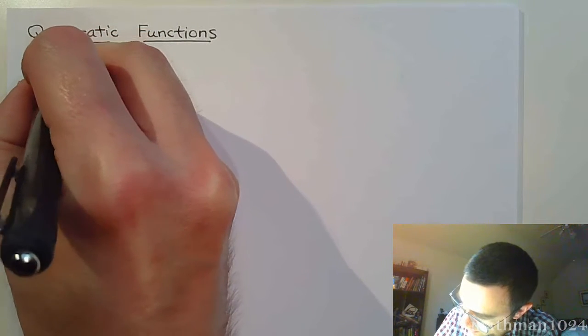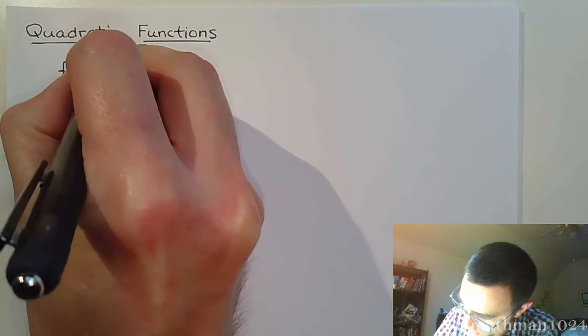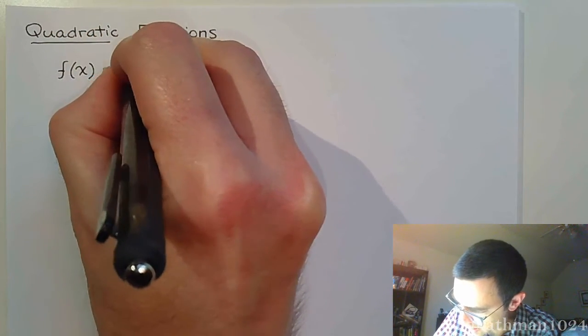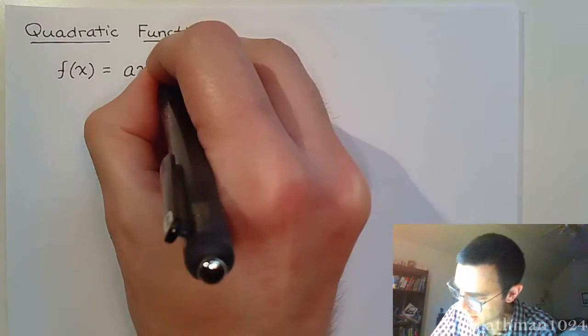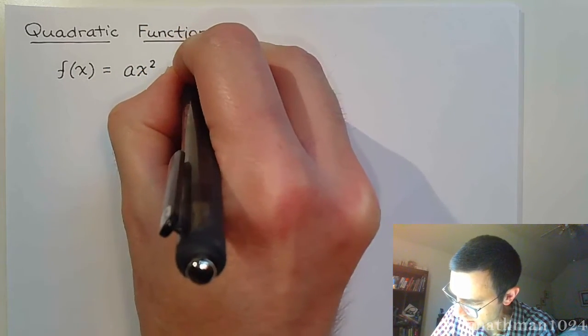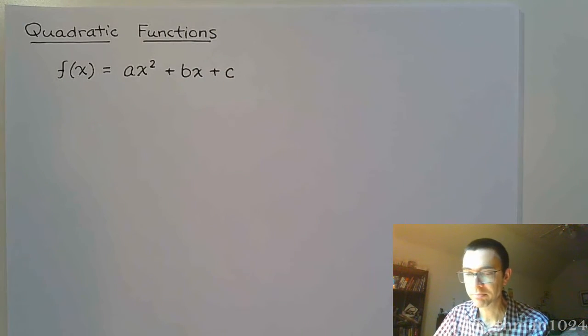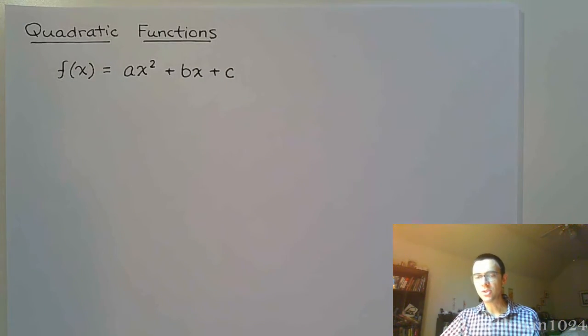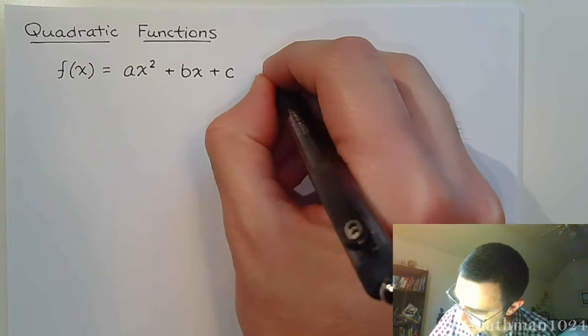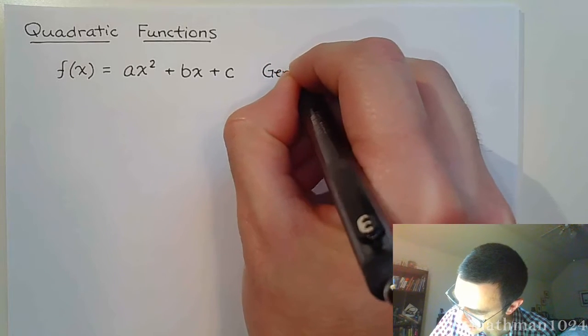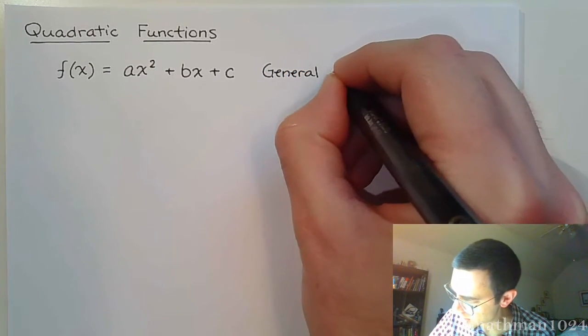Now a quadratic function is going to be of this form: f(x) is equal to ax² plus bx plus c. Now that is just the general form for a quadratic function. Let's just go ahead and call that what it is off to the side, so this is the general form.